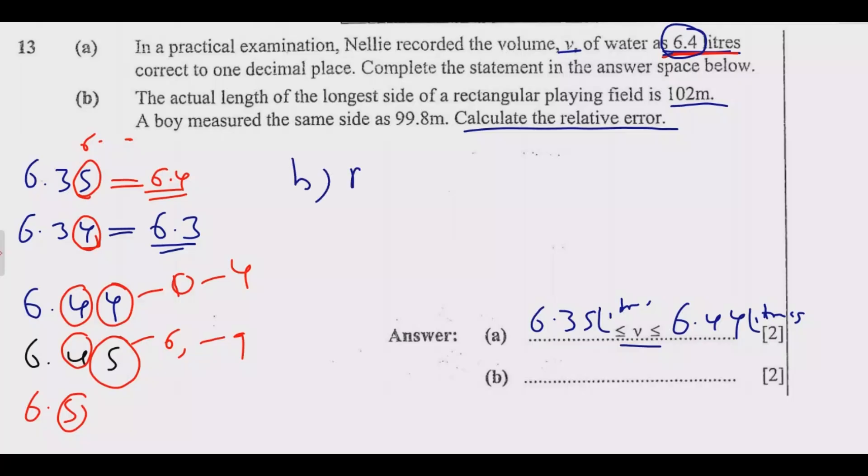How do we find the relative error? The formula for the relative error is given by measured value MV minus the actual value over the actual value. In this case, what is the measured value? The measured value is the one that the student obtains, which is this one, 99.8 meters. What is the actual value? The actual value is this one, which is 102. Once you have this, just substitute.